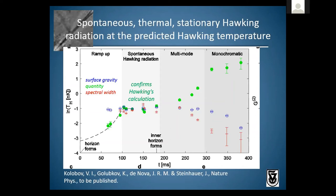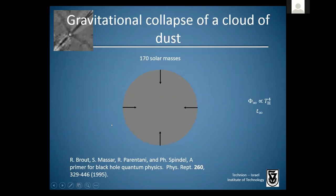This essentially confirms Hawking's semi-classical calculation in all respects. However, if we look at even earlier times, we see that the quantity of Hawking radiation is less than expected from the surface gravity. The analog black hole exists, but with little or no Hawking radiation. Fortunately, there is a dashed theory curve which agrees with the measurement — it's a theory curve for the gravitational collapse of a cloud of dust of a real black hole with 170 solar masses, chosen to match our Hawking temperature.